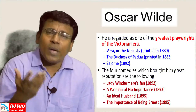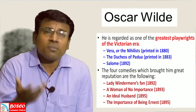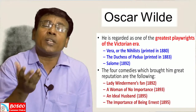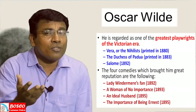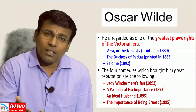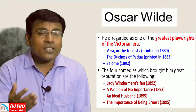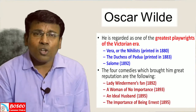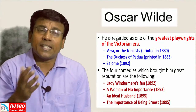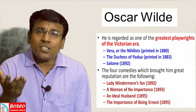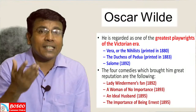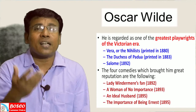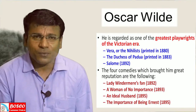Oscar Wilde is well remembered for his dramas and is regarded as one of the greatest playwrights of the Victorian era — notable given that the novel was the most important genre of the period. Some of his plays include Vera or The Nihilist, published in 1880; The Duchess of Padua, printed in 1883; and Salome, published in 1892.